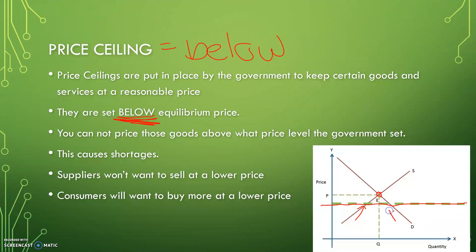Think of it like a room — markets tend to always want to meet the equilibrium price, so the market wants to move up and hit that point, but it can't because it's running into the ceiling. It can't go higher than the ceiling. Price ceilings want to reach equilibrium but can't — they want to go higher and increase, but they cannot.